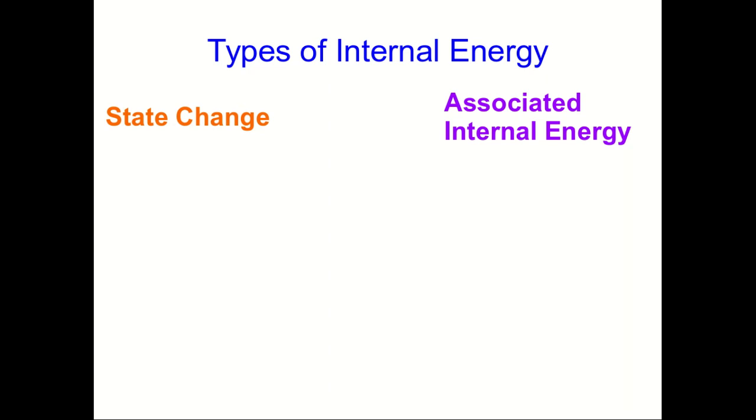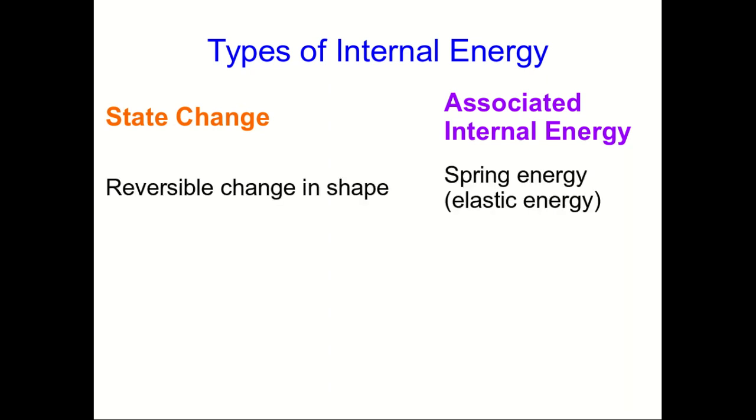Remember, the whole idea here is that we're associating changes of state in the system with the internal energy changing. So when a state of a system changes in a particular way, we say there's some particular type of internal energy that's changing. For example, when some part of our system changes shape, but in a reversible way so that it can spring back, then we call that spring energy, or sometimes you'll hear it called elastic energy.